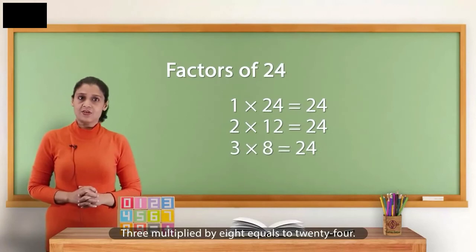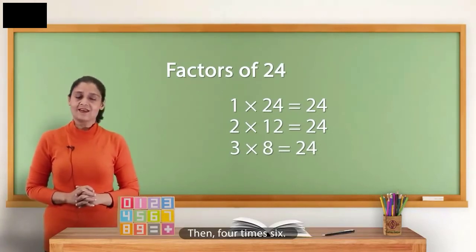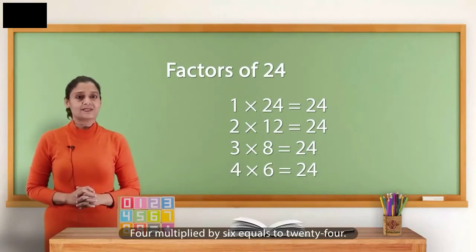Then, 3 times 8. 3 multiplied by 8 equals to 24. Then, 4 times 6. 4 multiplied by 6 equals to 24.